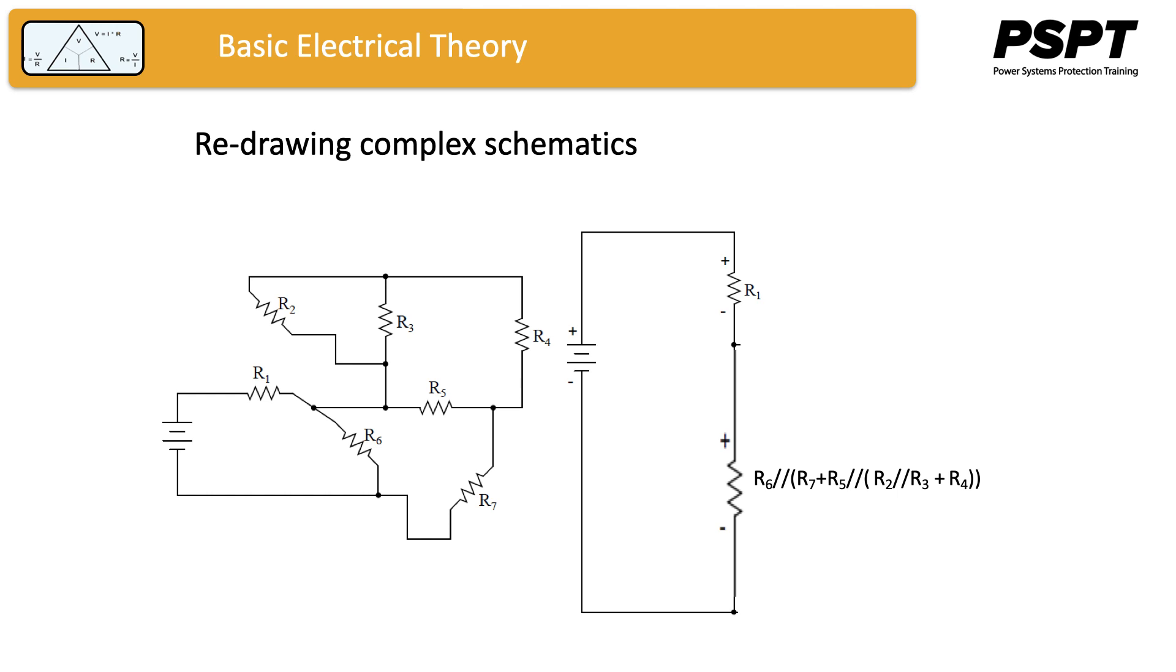That leaves us with just two resistors, which are simply in series, and we just need to add them together to give us one equivalent resistor. And I'm not going to go through the whole long harangue, but that is the equivalent resistance of all of the resistors in the mesh. So we can now calculate the current flow from the power source.